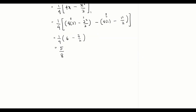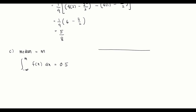For part c, we want to find the median. Let the median be m. The formula to find the median is: integrate f(x) from negative infinity to m, and the result must equal 0.5. Since the function is only defined between 1 and 3, the median m must lie between 1 and 3.